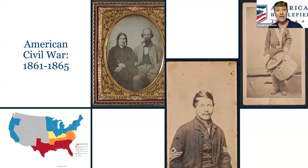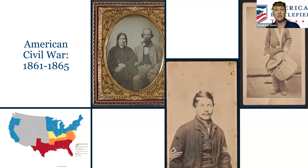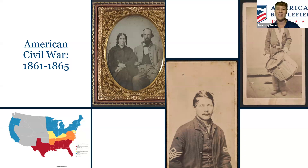The 1864 election is a very unique point in American history, where only a few states are going to be participating because 11 states have declared themselves out of the Union. They said they wanted nothing to do with this system of government, forming their own separate government — the Confederate States of America — with their own president. So we have some really interesting things going on on the electoral map.